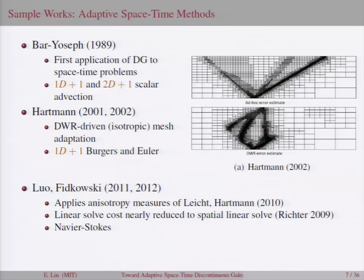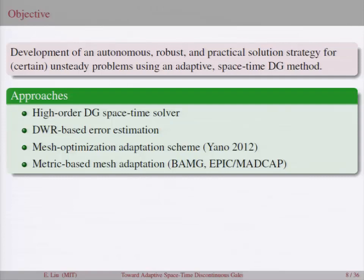So kind of my goal here would be to develop an autonomous, robust, and practical solution strategy for certain unsteady problems using a space-time DG method. And sort of like the high level technologies I'll be employing are a higher order DG scheme, DWR-based error estimation, a mesh optimization-based adaptation strategy, and metric-based meshing.